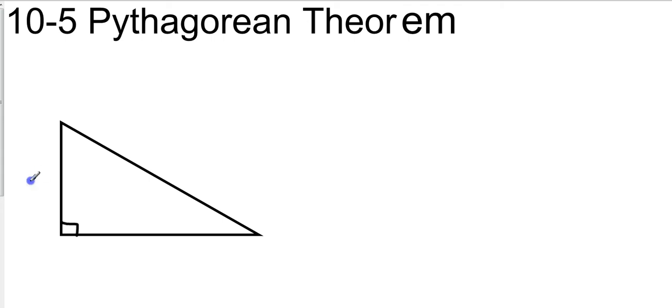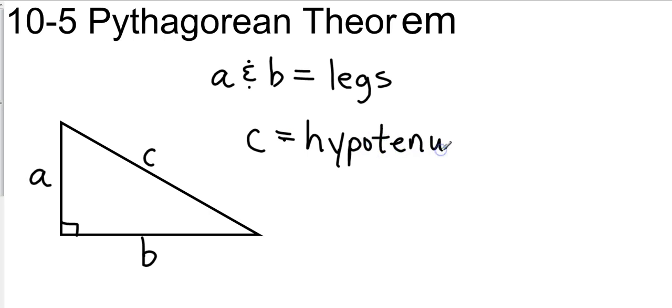We have side A, side B, and side C. A and B are called legs. They are the legs of the right triangle. And C is called the hypotenuse. And as it looks, if you're staring at the triangle, the hypotenuse is the longest side.